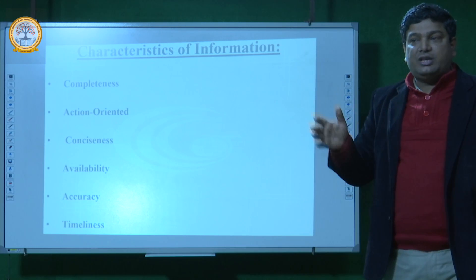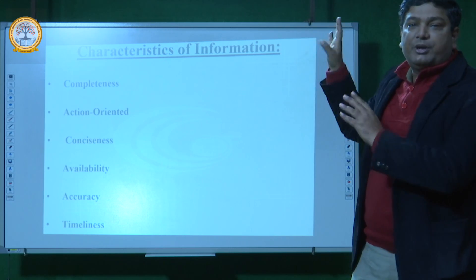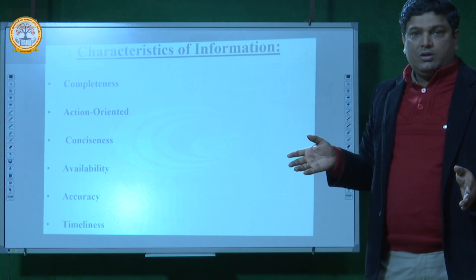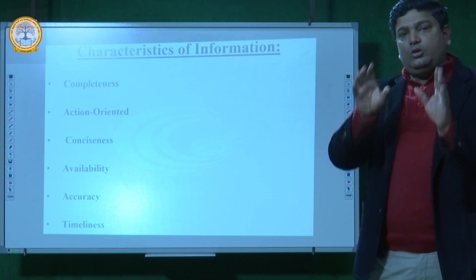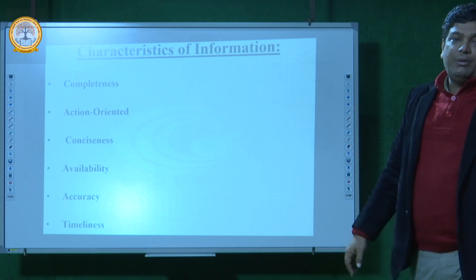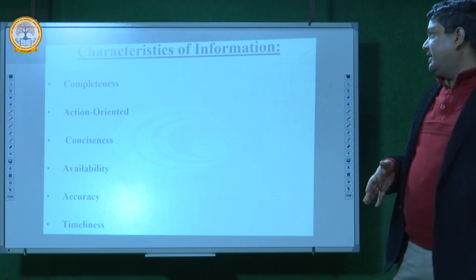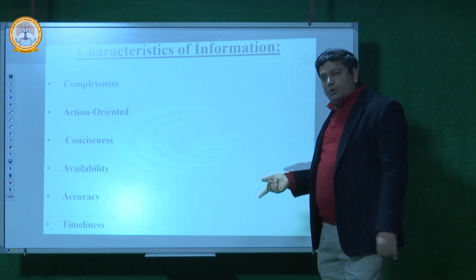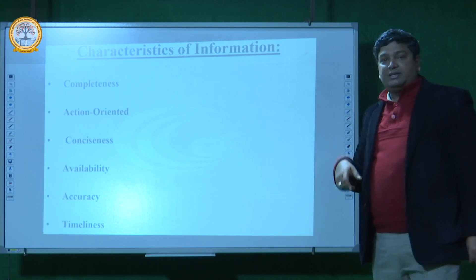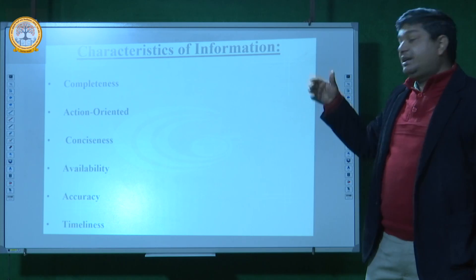Third is conciseness. Conciseness means covering particular information, not very large data. Your conciseness information is very important in characteristics of information. Availability: easily available of any information. Accuracy is more important in characteristics of information systems. More accurate data returns more accurate results. And timeliness: within time complete your information is called timeliness.